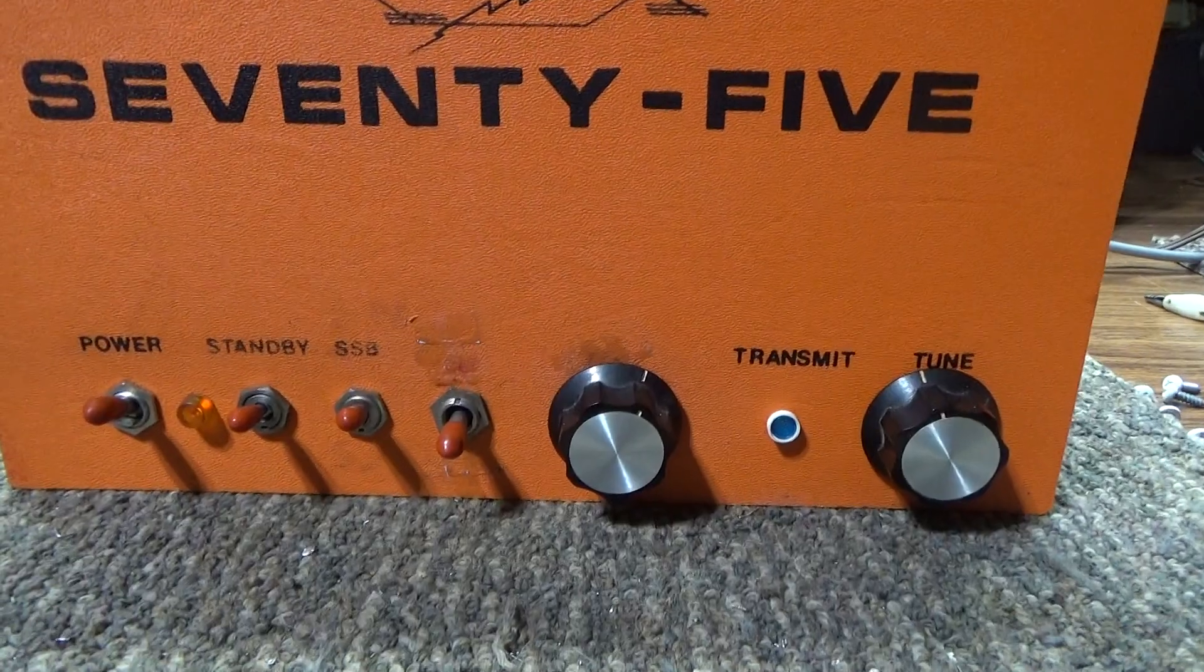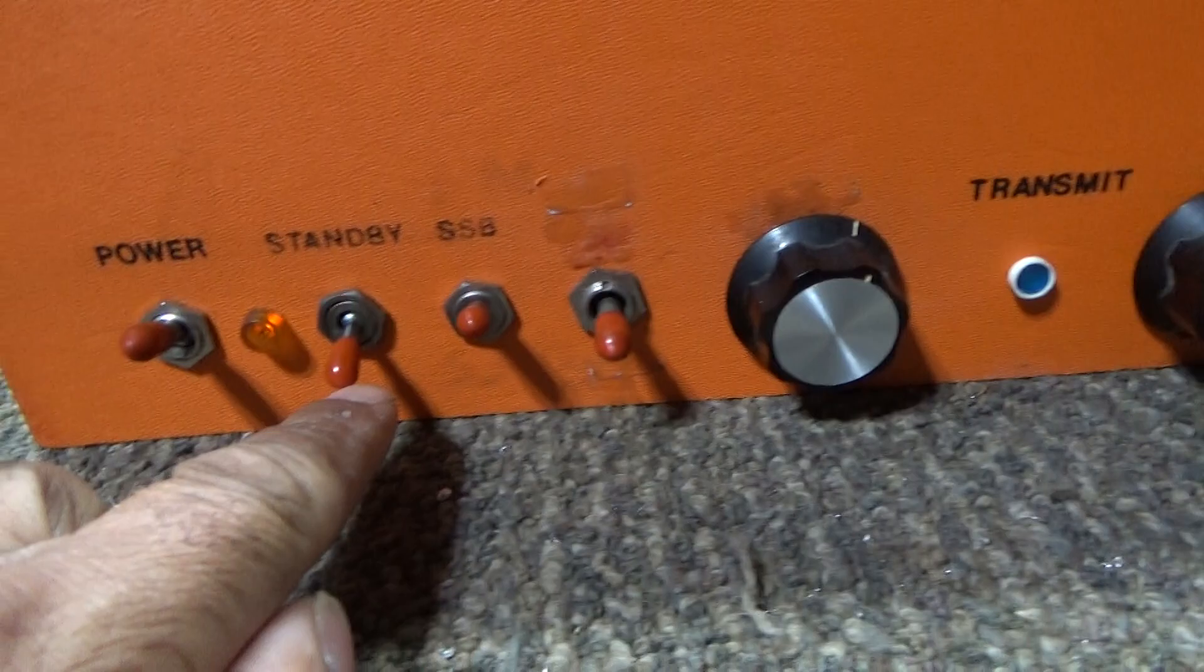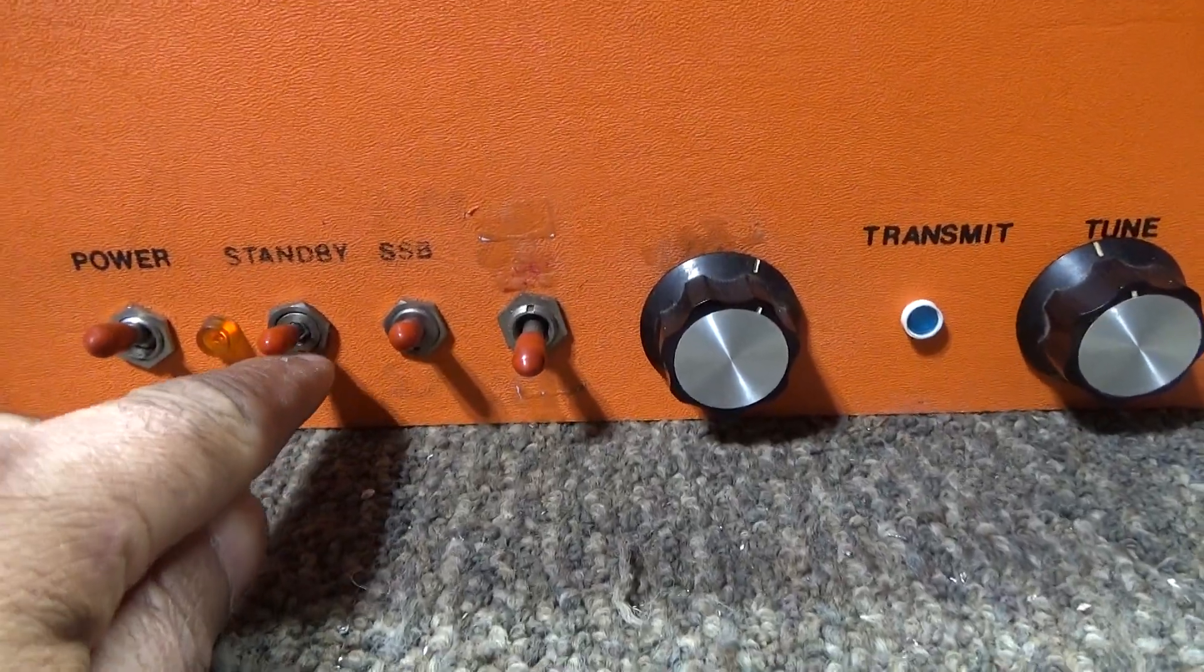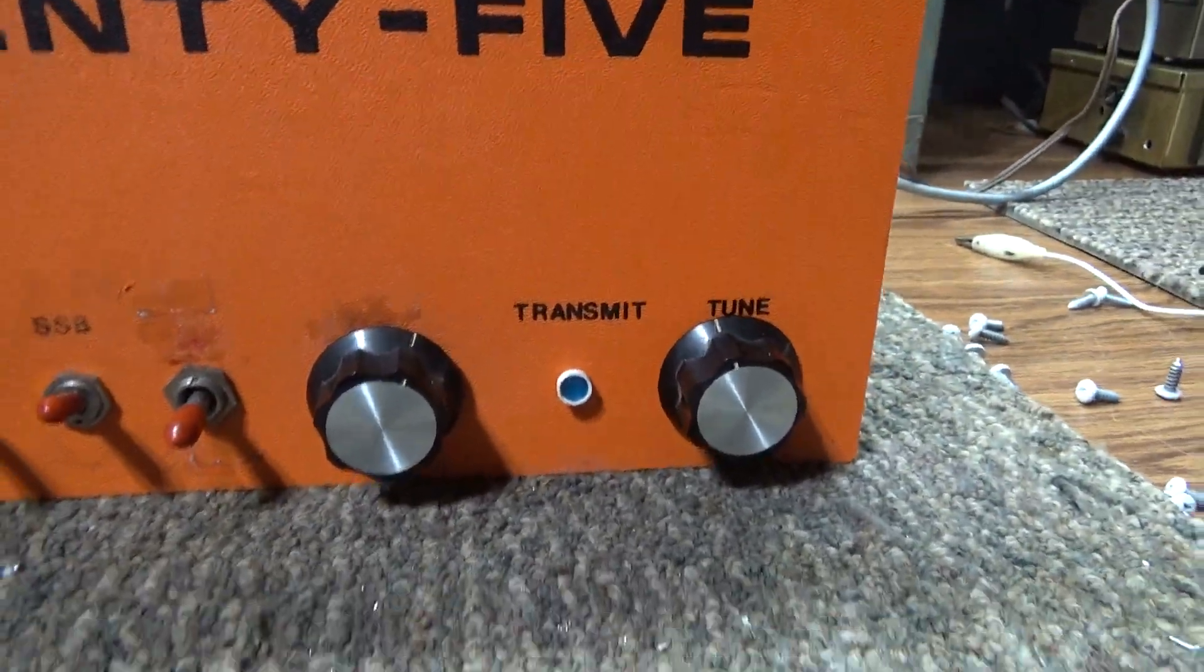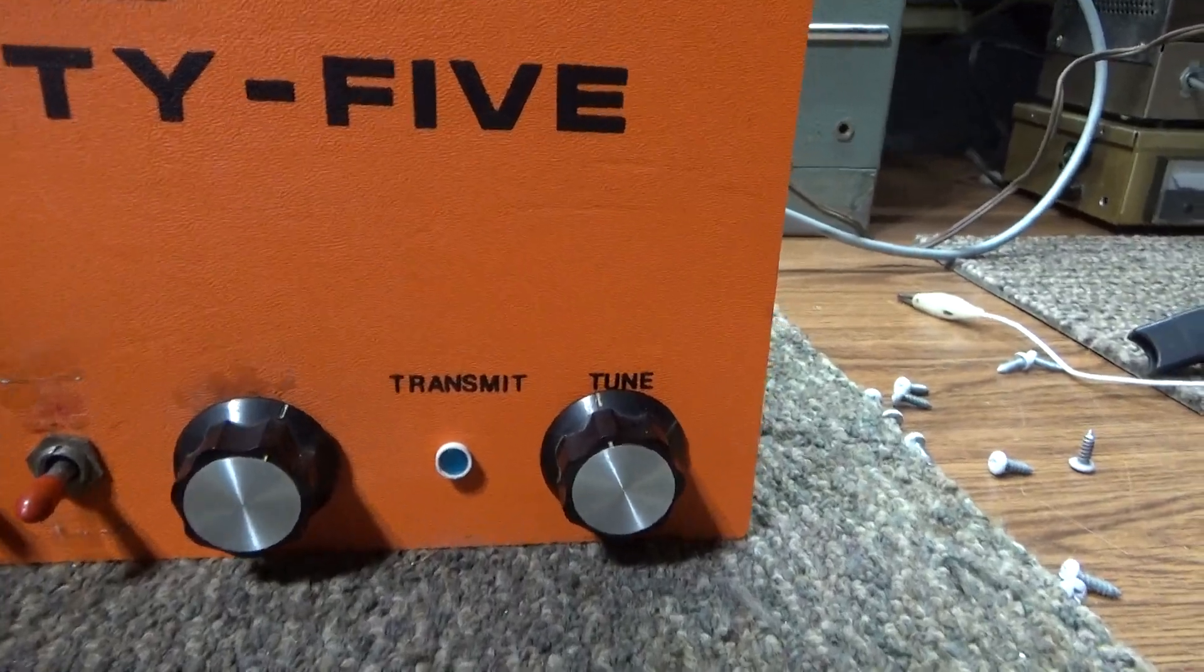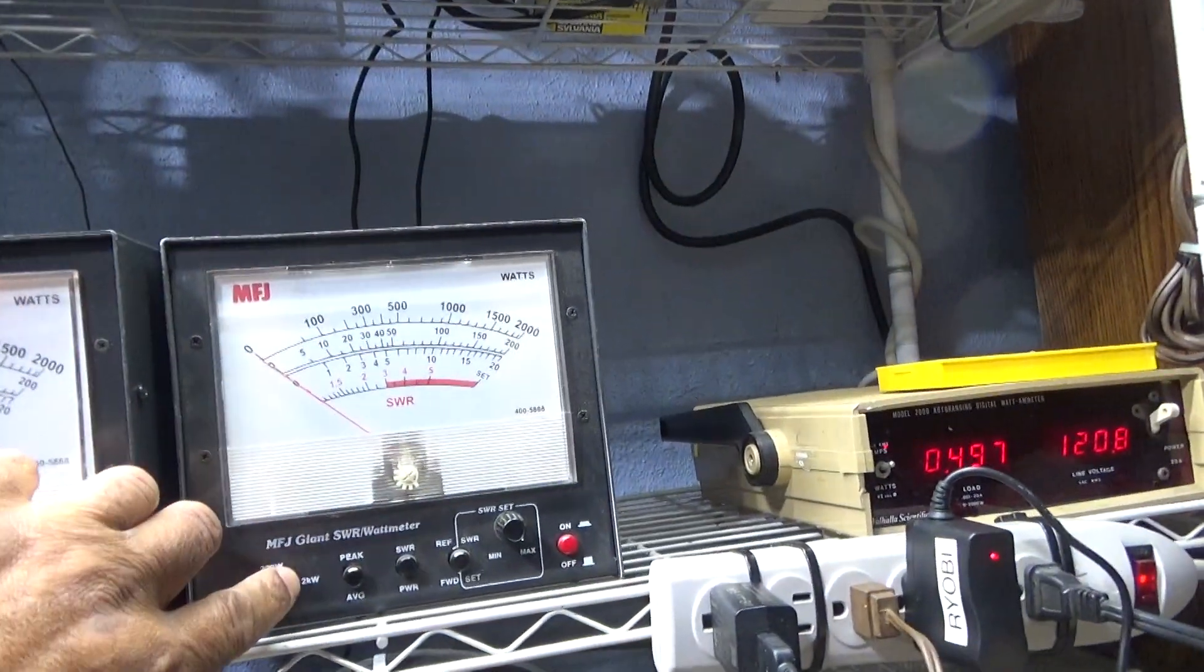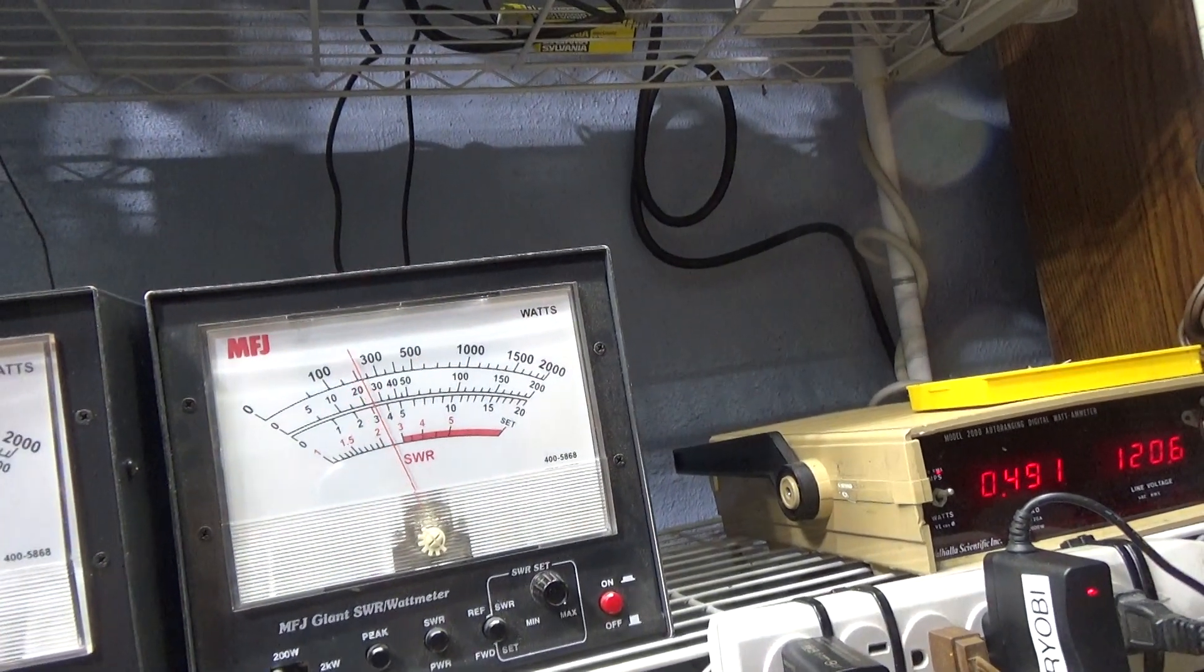This all the way down here is the preamp on, and in the middle is standby, and then all the way up is operate with the preamp off. The preamp does work on this one. Anyway, we're just going to put it on standby. 4-watt radio going through, it's going to 20-watt scale going into a dummy load, two and a half watts.